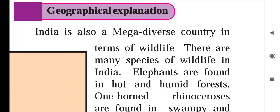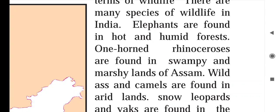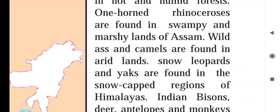India is also a mega diverse country in terms of wildlife, meaning our country also has a great variety of animals and birds. Elephants are found in the hot and humid forests. One-horned rhinoceros are found in the swampy and marshy lands of Assam. Wild asses and camels are found in arid lands like deserts. Snow leopards and yaks are found in the snow-capped regions of the Himalayas.